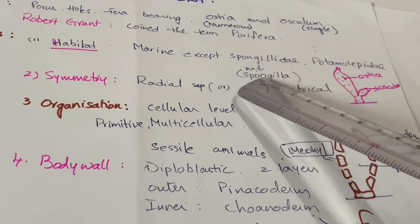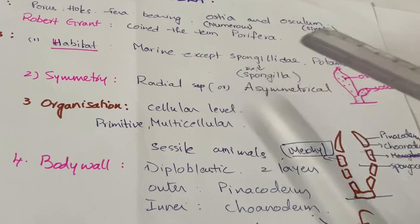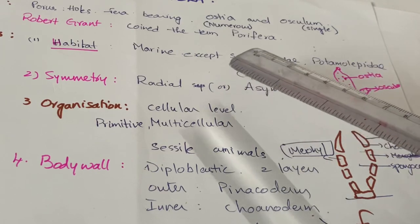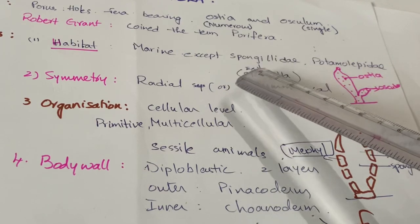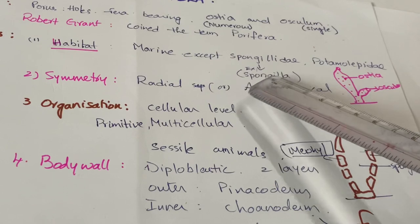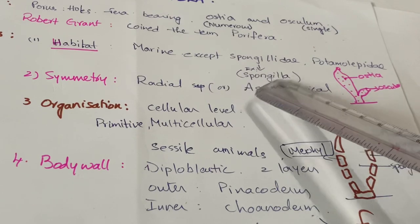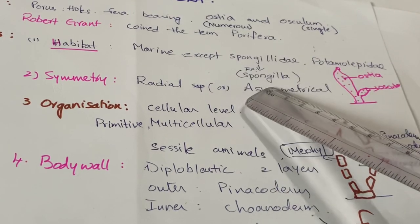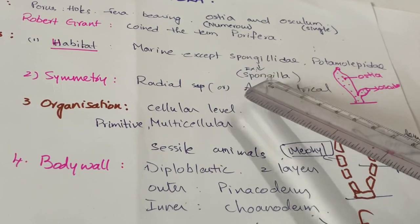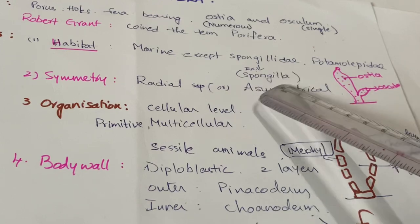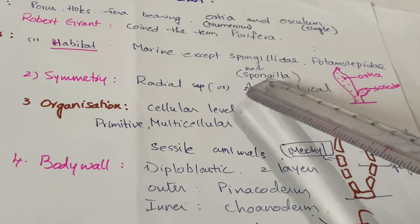The animals of these families are freshwater animals. An example for Spongillidae is Spongilla, which is the exception for the marine habitat — Spongilla lives in freshwater.